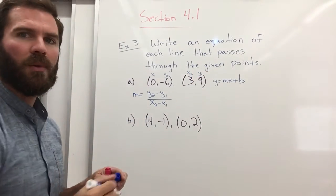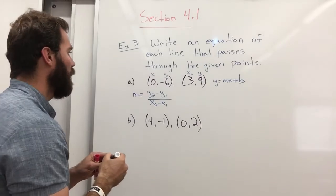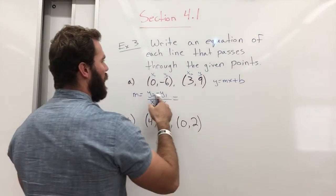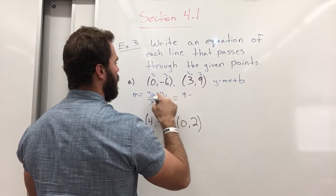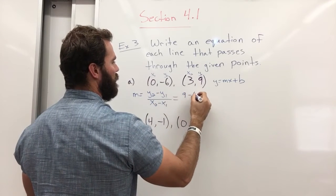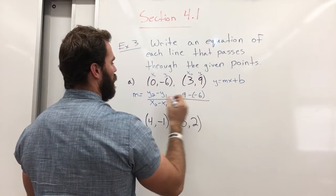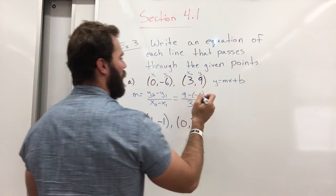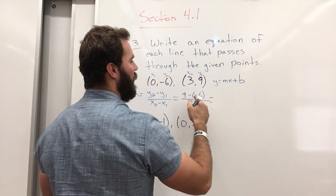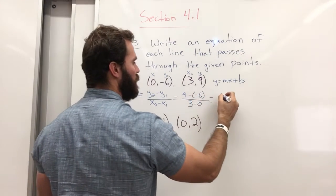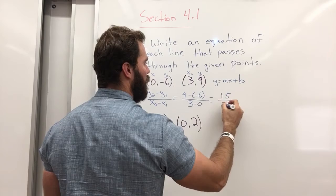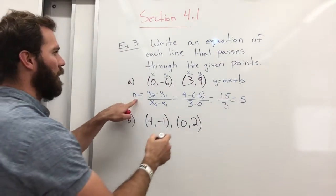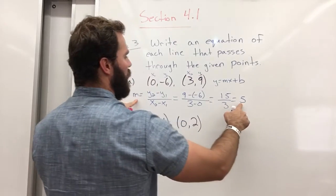All right, I probably should use a different color. So let's go ahead and plug in our numbers. So y2 is 9 minus y1, which is negative 6, over x2, which is 3 minus 0. 9 minus a negative 6 is the same as 9 plus 6, which is 15, over 3, which is 5. So we have m, we have m now.